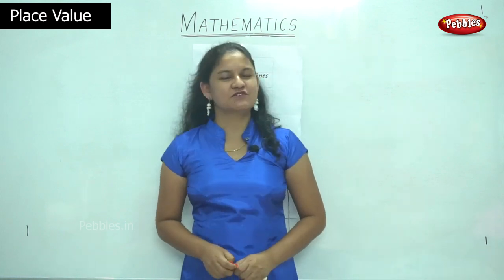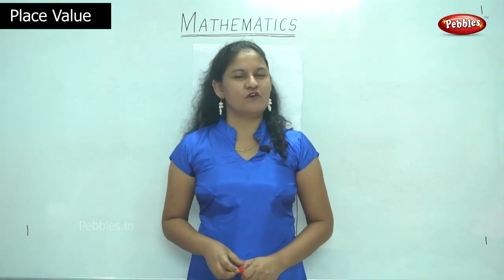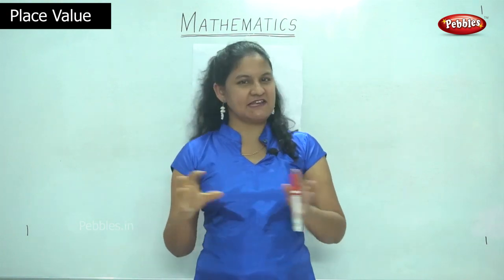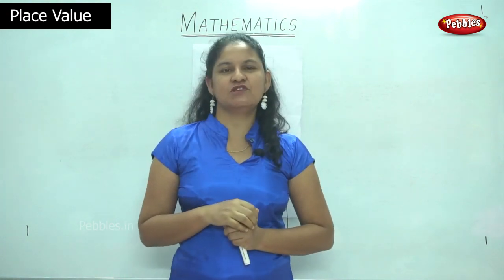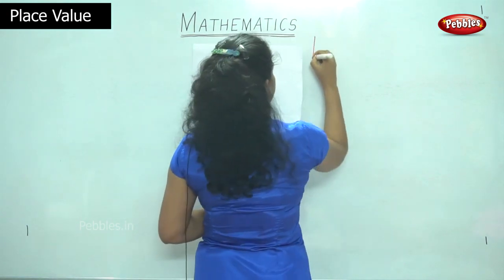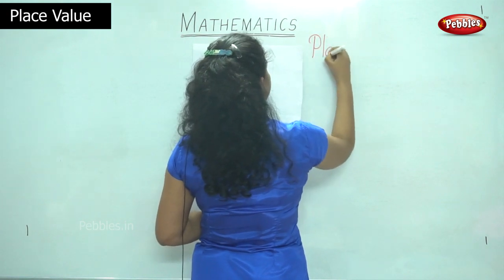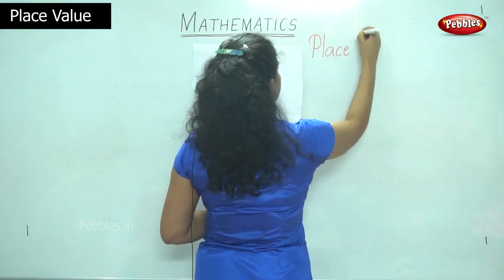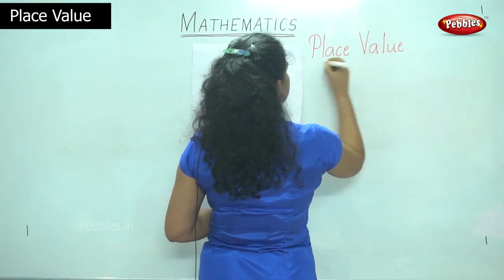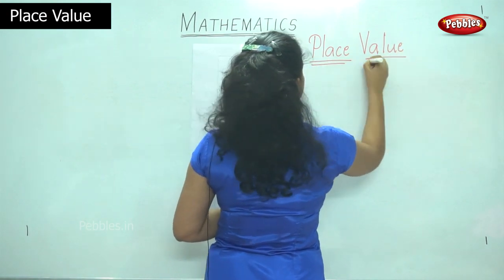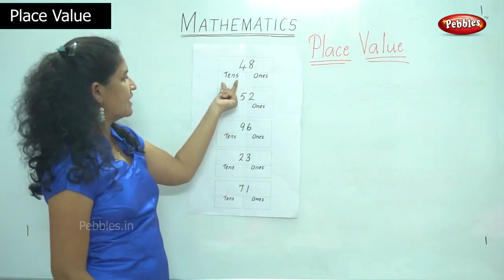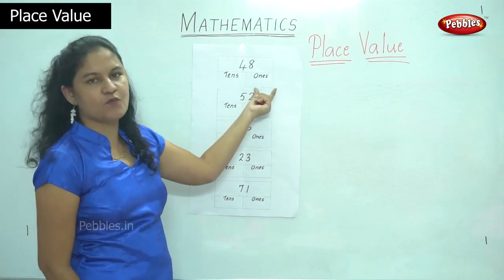Today we are going to learn to write the place value for randomly selected numbers. I have a few numbers that I have selected randomly and I am going to show you how to write the place value for these numbers. So our topic is place value. The first number I have is 48, and I have the table with 10s and 1s.